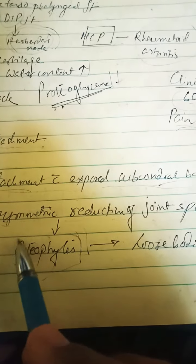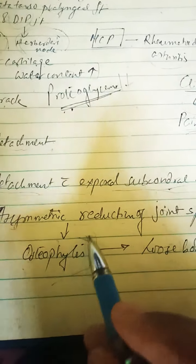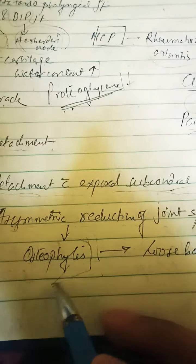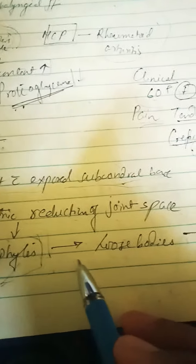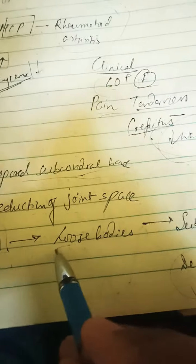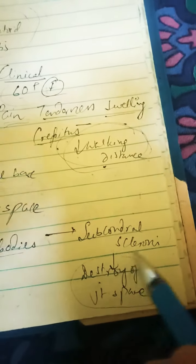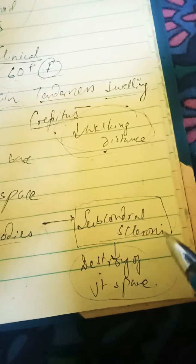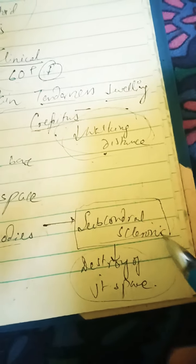There is formation of osteophytes — projections of bone tissue — and loose bodies are formed. In the chronic stage, this results in subchondral sclerosis, with sclerosis and destruction of the joint space.